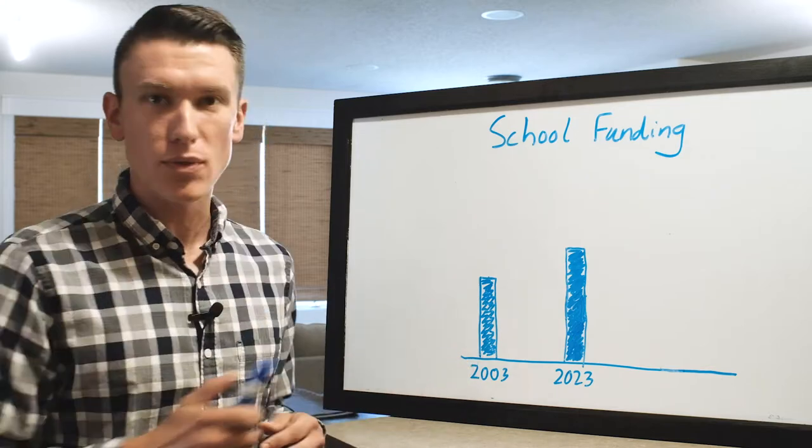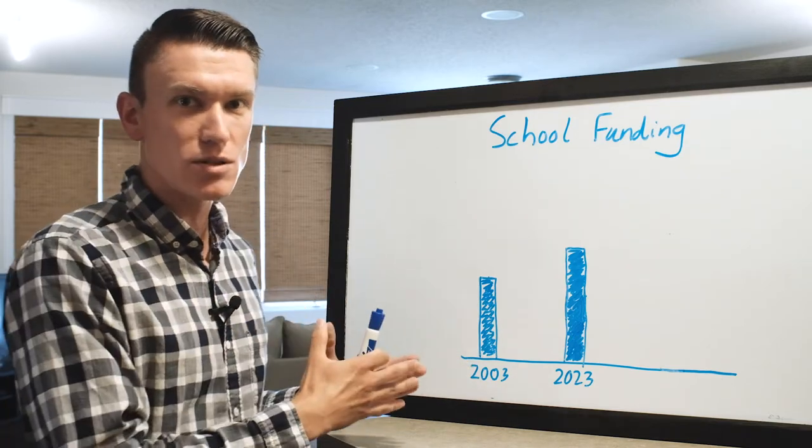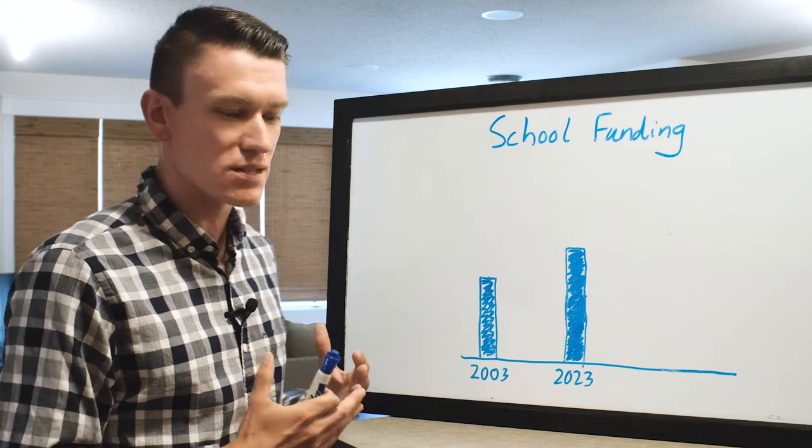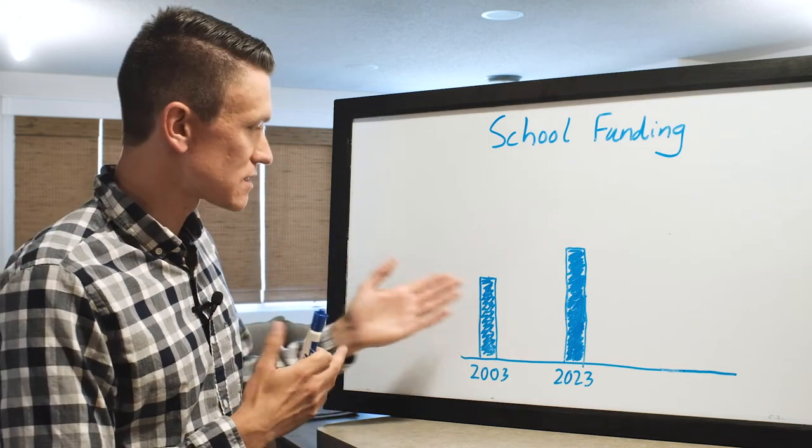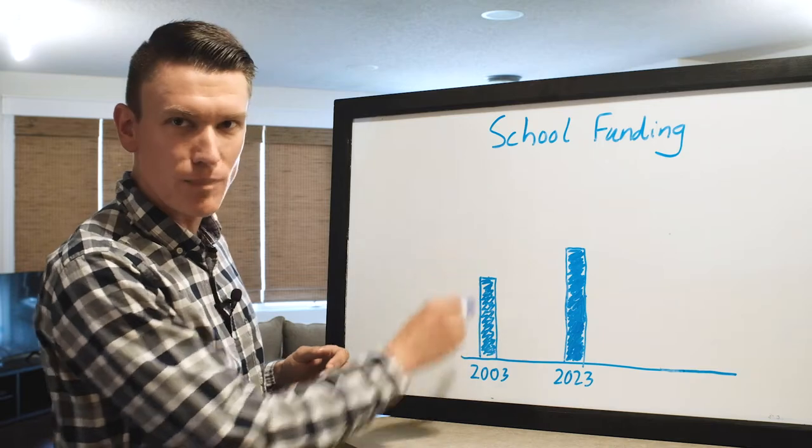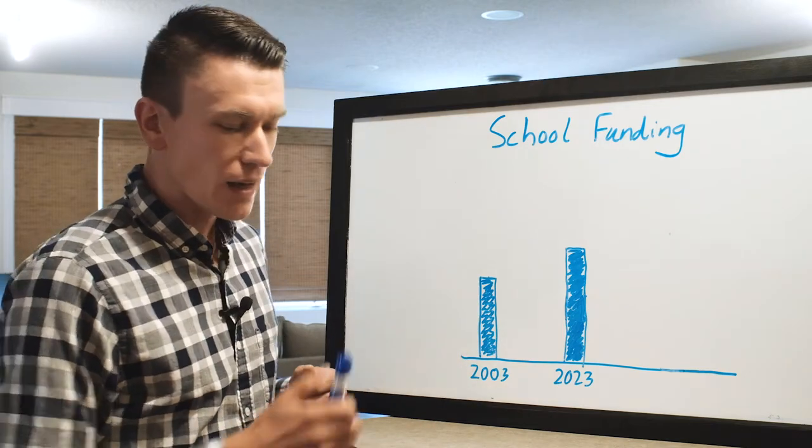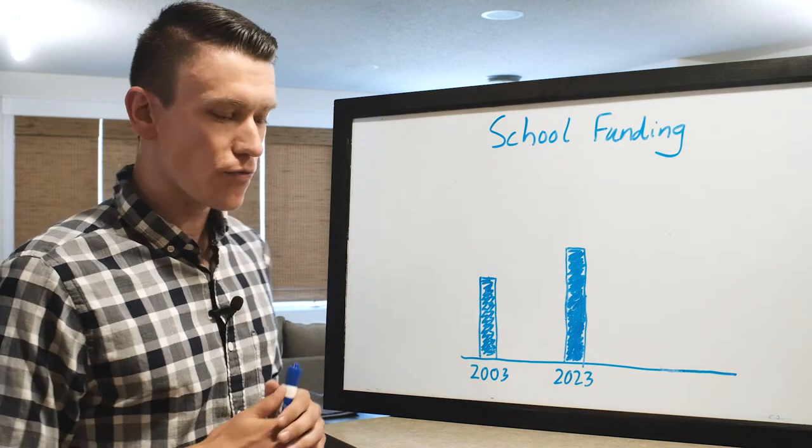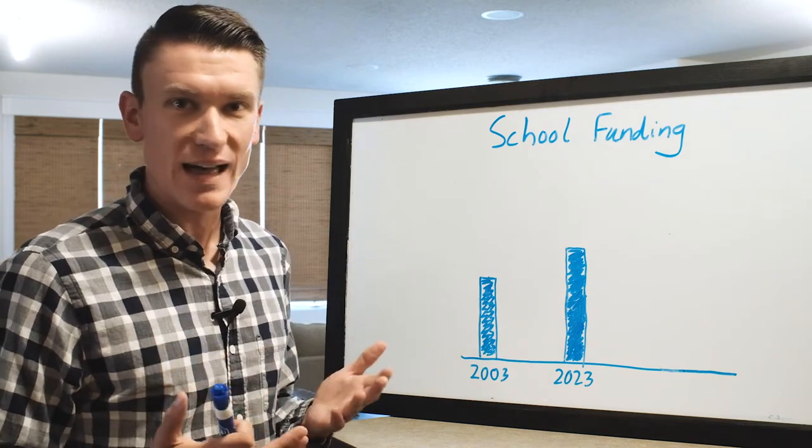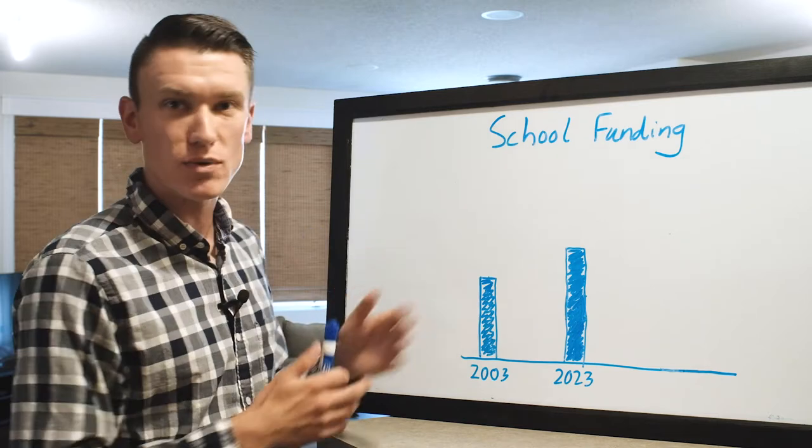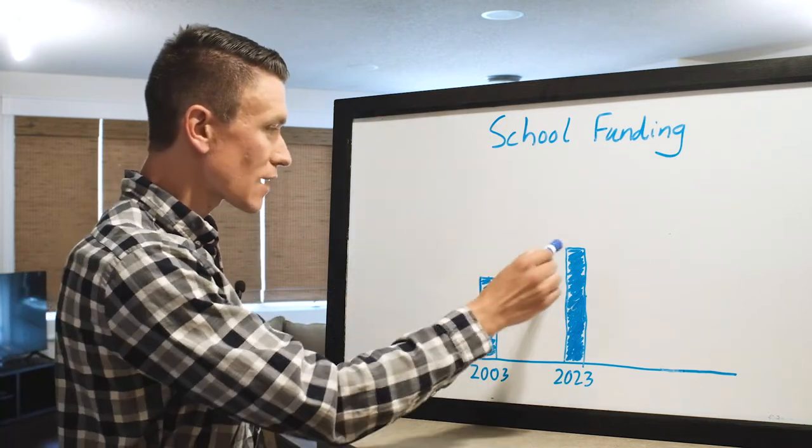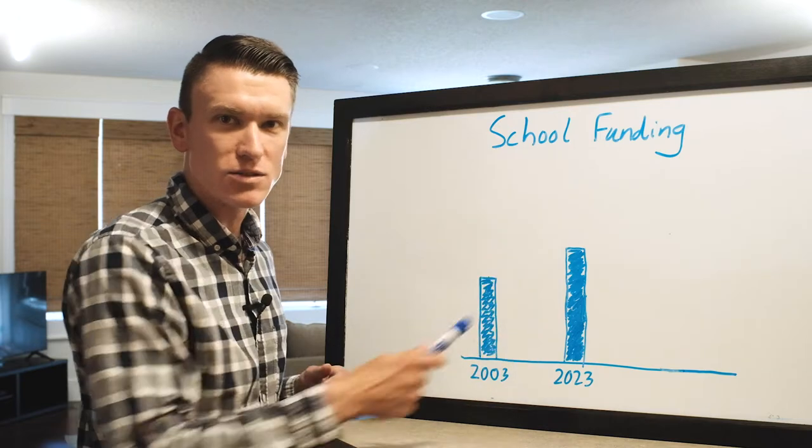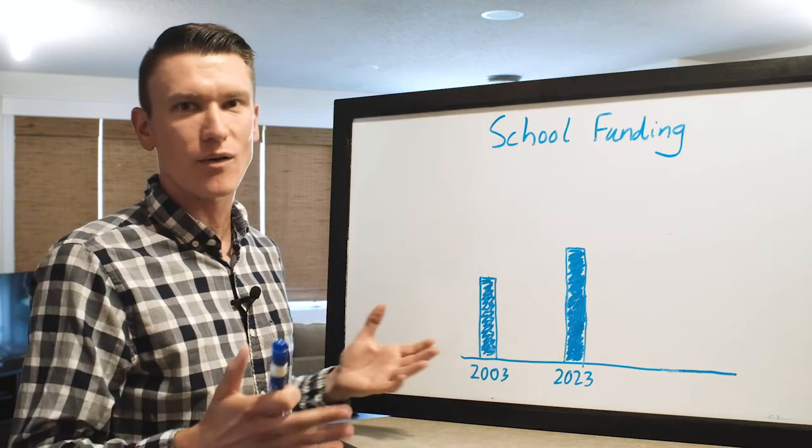And back in 2003 the funding per student that the school districts got from the state was $4,966 which is indicated by this bar right here. Jump ahead to 2023 and the per student funding from the state is $6,863 and so you may be saying well look at this big gap we keep giving more money to the schools and we're not getting better outcomes.